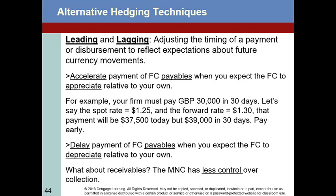You could engage in a hedge, but you may simply be in a position to go ahead and pay early. That does have a cost — if you've got $38,000–$40,000 just sitting around with no prospects for use, it may have no opportunity cost. But for the most part, most companies do see that their cash has a cost to it. So accelerate payment of payables when you expect the foreign currency to appreciate, and delay payment when you expect the foreign currency to depreciate relative to your own.